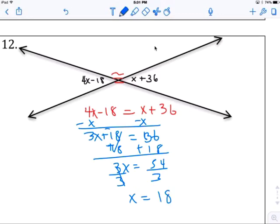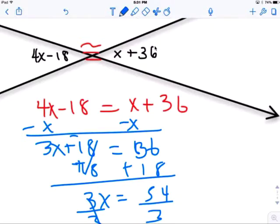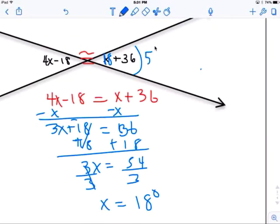So if you go back to 18, you put 18 in x right there, you get 54 degrees. And I'm sure if you do that and then minus 18, you'll get 54 also. And it's also 54 degrees, congruent to each other.